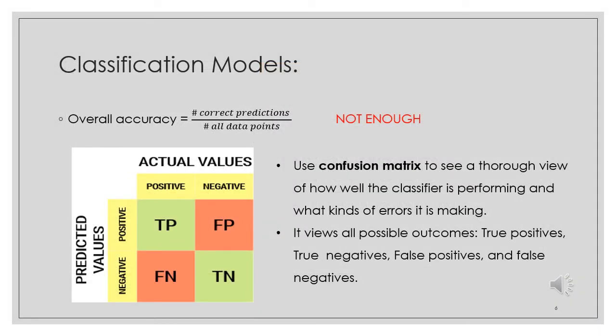Classification models output a class or label for a given input data. Binary classifications have two possible output classes, and multi-class classifications have more. The overall accuracy can measure how often a classifier makes the correct prediction, but it is not enough. A confusion matrix shows a more detailed breakdown of correct and incorrect classification for each class. To decrypt the matrix, we need to understand four different values: true positive, true negative, false positive, and false negative.